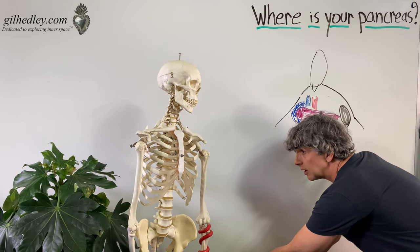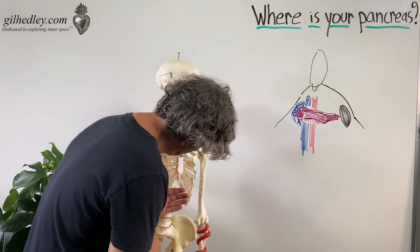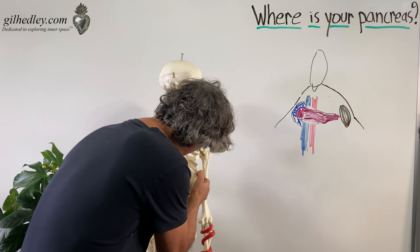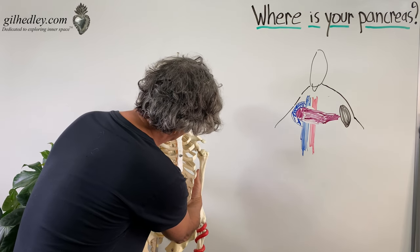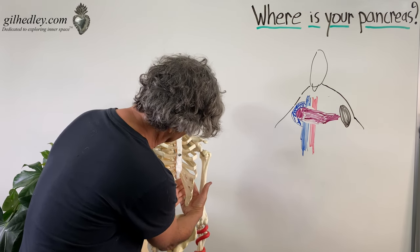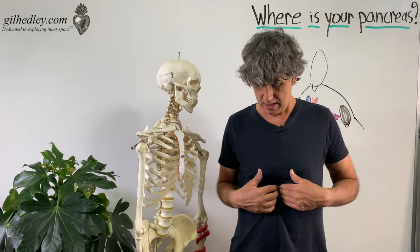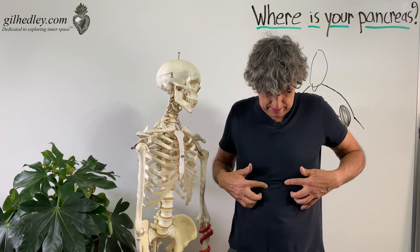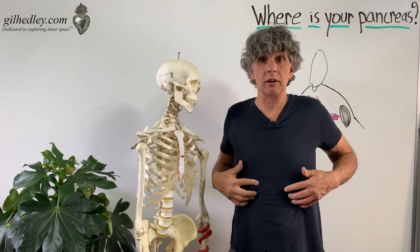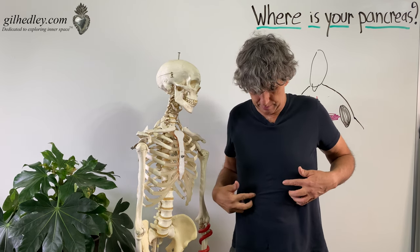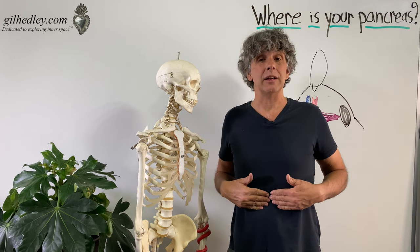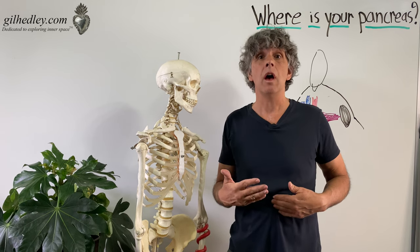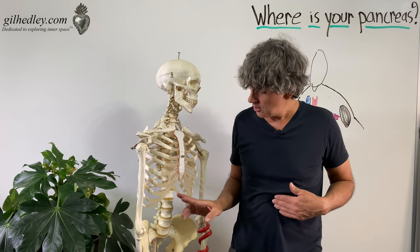So here's the pancreas, and the tail is headed over towards that pocket in the ribs where the spleen lives. If you want to find it on your body, go to the xiphoid process — the very tip of your sternum. Then it gets soft; that's your belly. Feel your way out along your ribs into this little triangle or inverted V shape, and your pancreas is living deep to this spot, all the way down over your spine where your aorta and vena cava run.